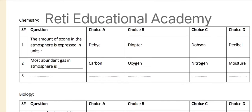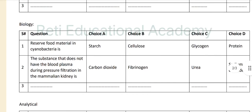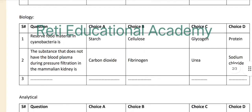I have already uploaded chemistry MCQs in the chemistry playlist that will help you for the preparation of the entry test. Now questions from the biology portion — these questions will help you get an idea for the actual test. Question number one: a reserve food material in cyanobacteria is —